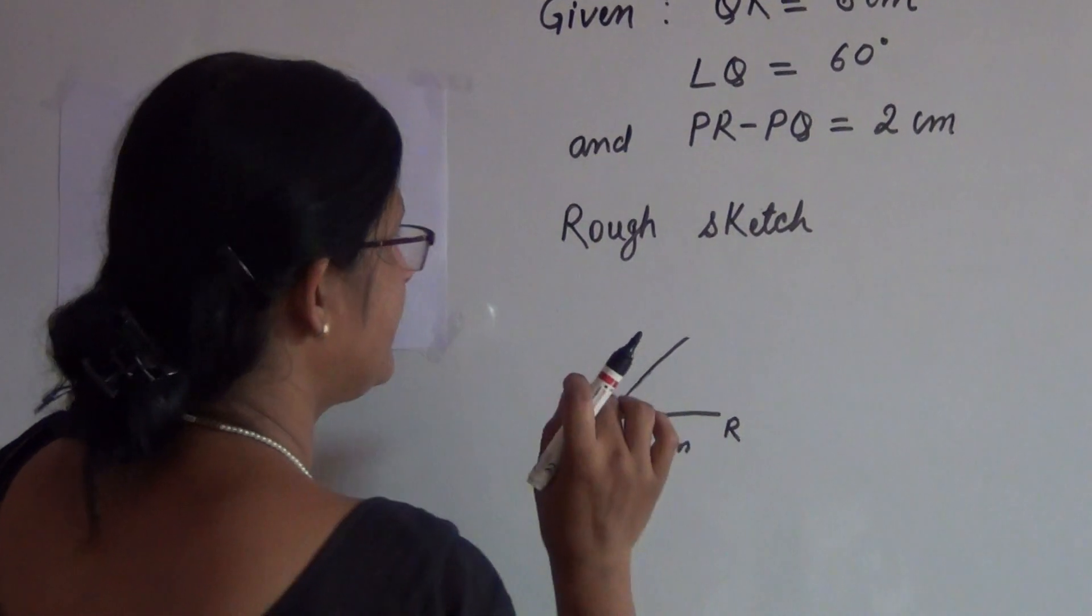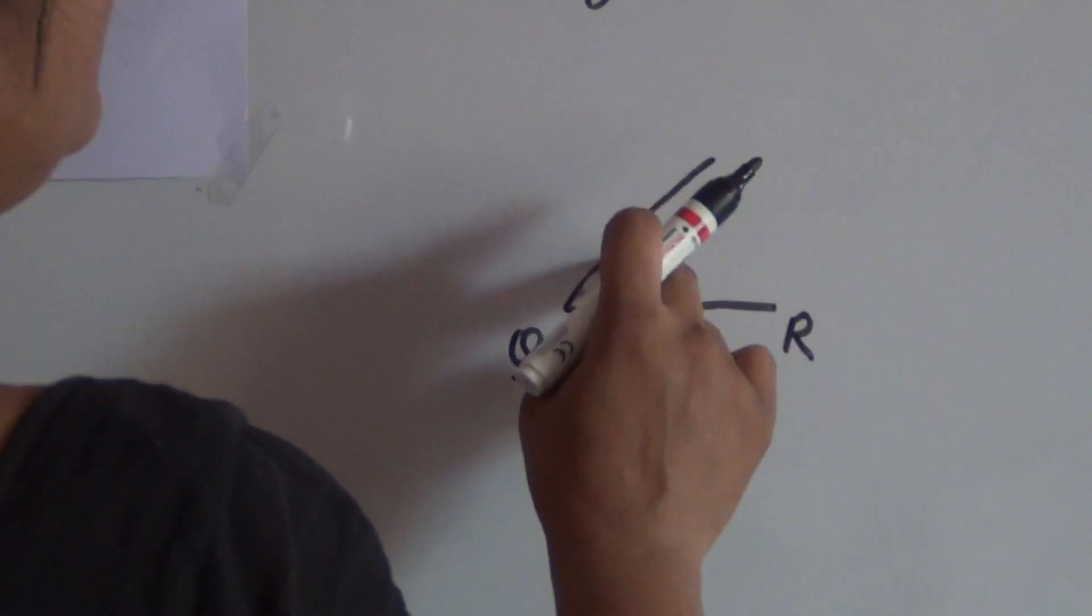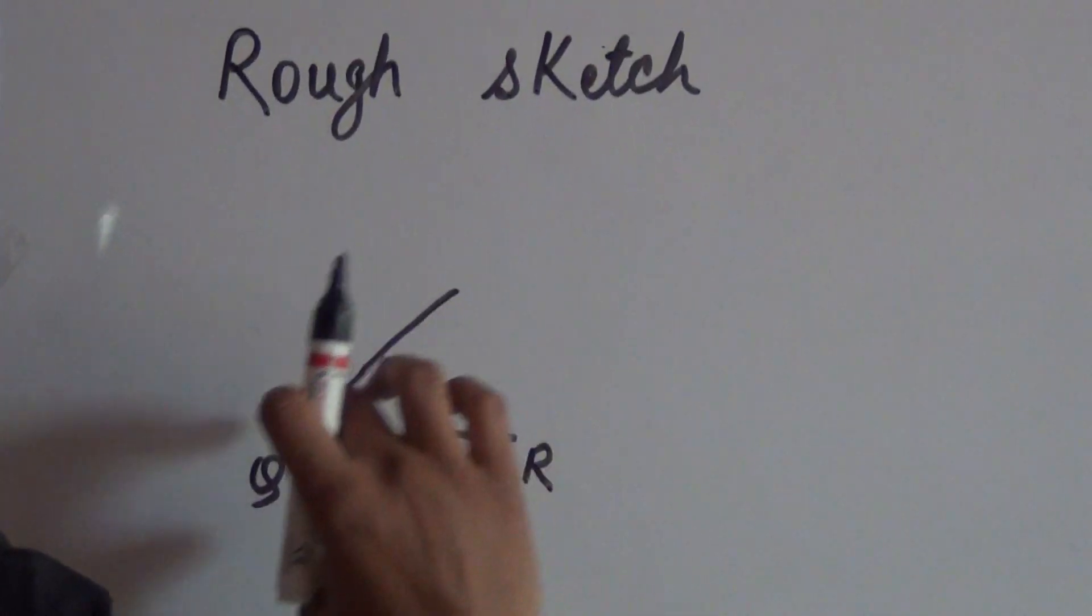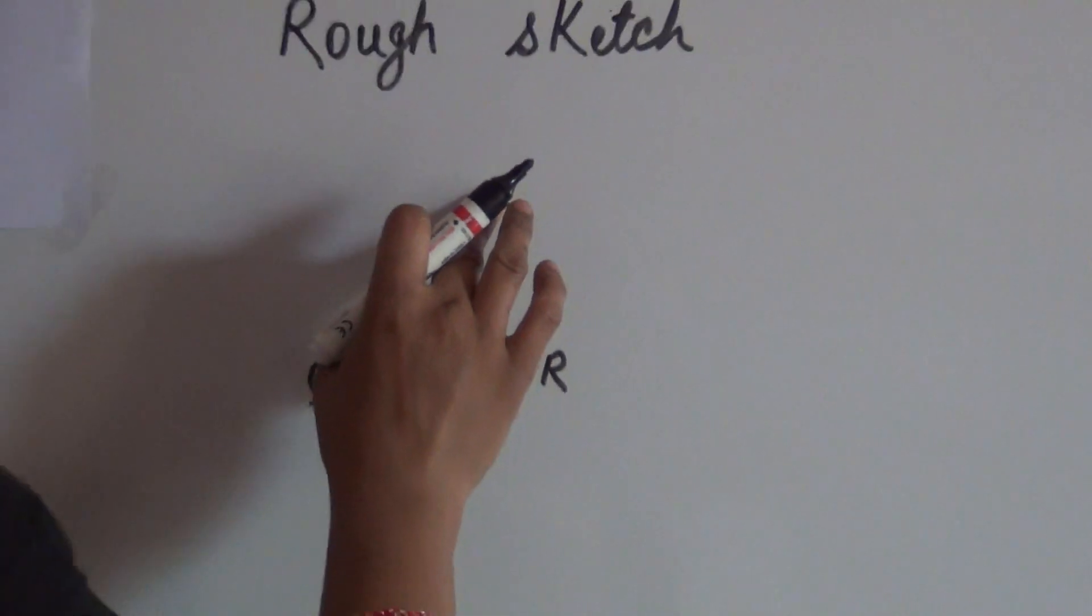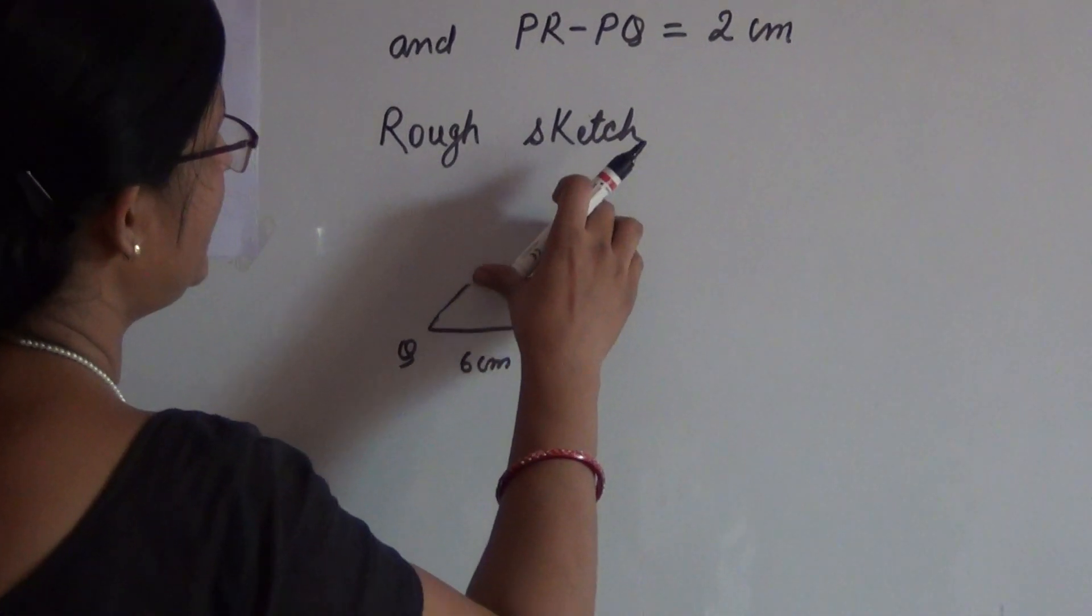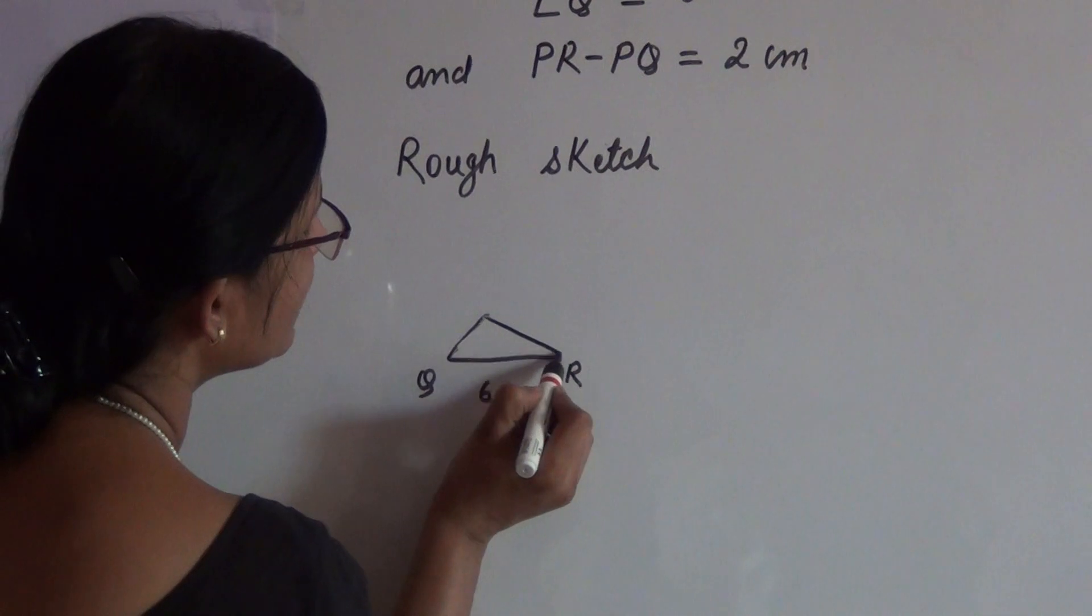We have to stop here a little bit. P is lying anywhere on QR, but it is given that PR minus PQ is 2 centimeters. That is, PR is longer than PQ, so we can reduce. We have to reduce this line because PR is longer, so this will be longer.